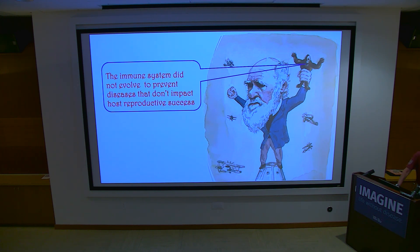The immune system did not evolve to prevent diseases that don't impact host reproductive success. The immune system doesn't care that we feel shitty for two weeks unless it means we're going to have fewer children.